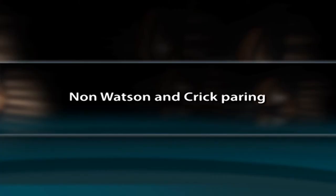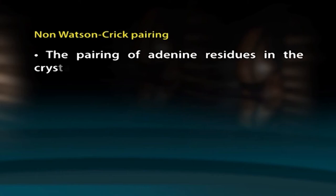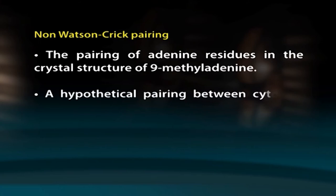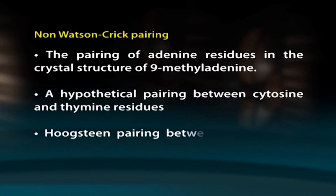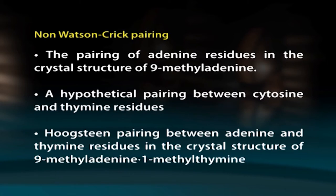Non-Watson-Crick base pairing: Pairwise combinations of hydrogen-bonded coplanar bases other than Watson-Crick pairings give rise to non-canonical or mismatched pairs. Unlike the majority of DNA structures stabilized by canonical Watson-Crick base pairing between adenine-thymine and guanine-cytosine, those adsorbed on surfaces are often stabilized by non-canonical base pairing, quadruplex formation, and base-surface stacking. Most commonly seen non-Watson-Crick pairings include the pairing of adenine residues in the crystal structure of 9-methyladenine, a hypothetical pairing between cytosine and thymine residues, and Hoogsteen pairing between adenine and thymine residues in the crystal structure of 9-methyladenine·1-methylthymine.